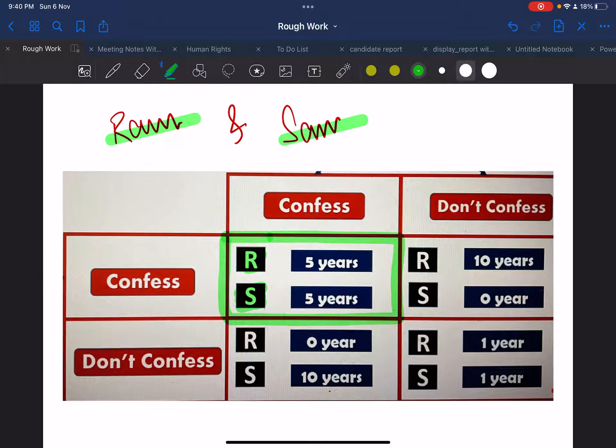Police says to Ram: in case if you confess, then you will get zero years of imprisonment, and in case if Sam goes quiet, then he will get 10 years of imprisonment.